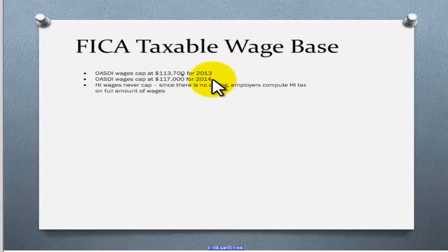For 2014, it's $117,000. For 2015, I'm sure it will go up. It pretty much goes up every year. That means that in 2013, if you made $113,701, that one extra dollar was not taxed for OASDI. HI, or Medicare, wages never caps. Since there's no ceiling, employers compute the HI tax on the full amount of wages.